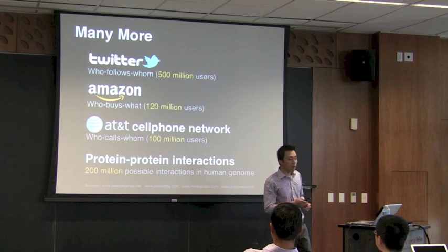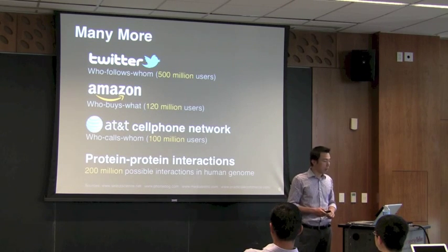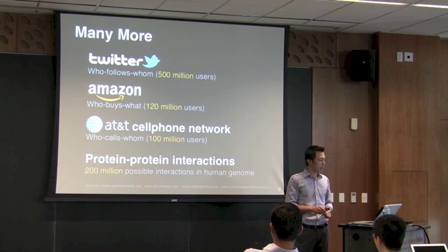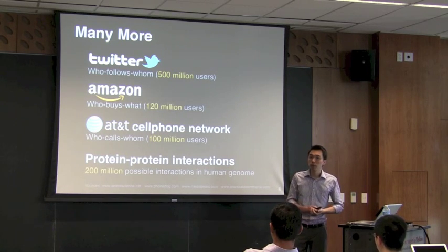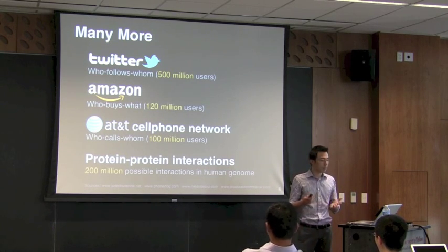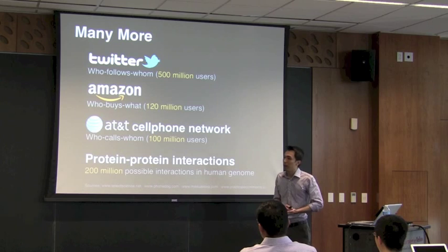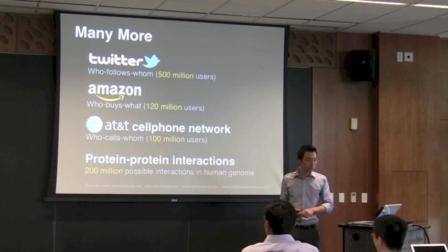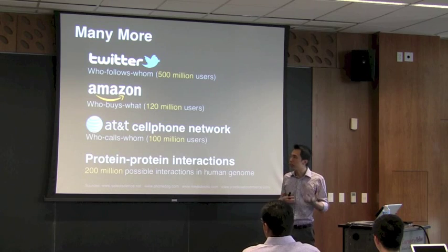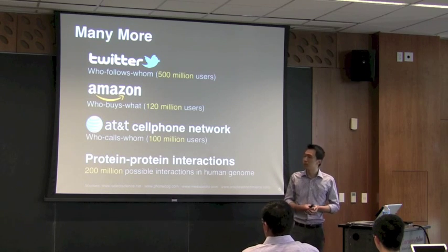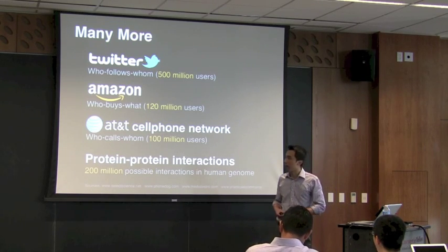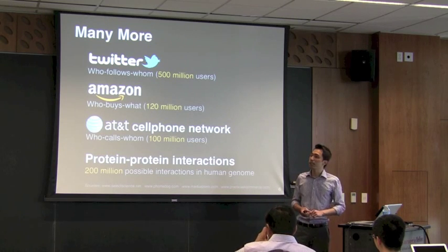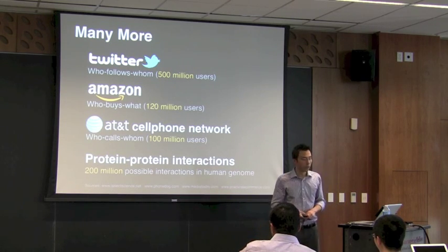These graphs are not only getting bigger, they are also growing in number. They provide new opportunities we've never seen before — they can allow us to better understand how people interact, for example through Twitter or Facebook, help us predict business trends from Amazon or AT&T cell phone networks, and also help prevent diseases if we know how proteins interact.